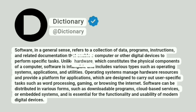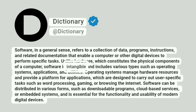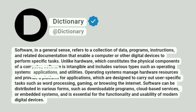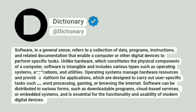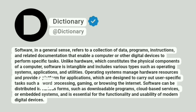Unlike hardware, which constitutes the physical components of a computer, software is intangible and includes various types such as operating systems, applications, and utilities. Operating systems manage hardware resources and provide a platform for applications, which are designed to carry out user-specific tasks such as word processing, gaming, or browsing the internet.